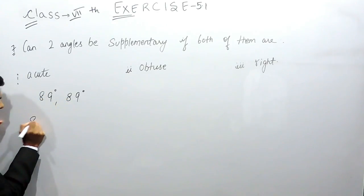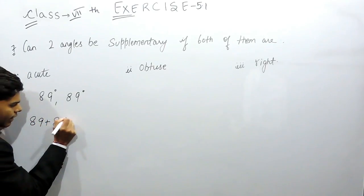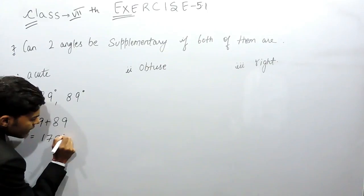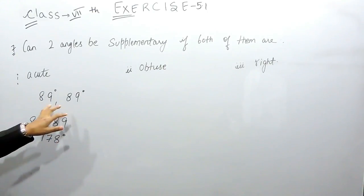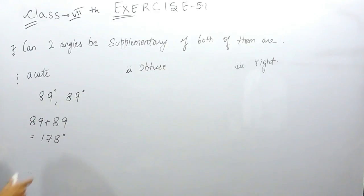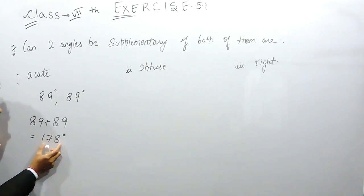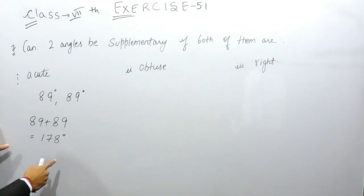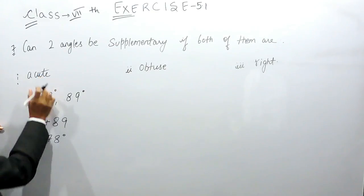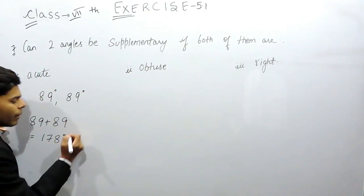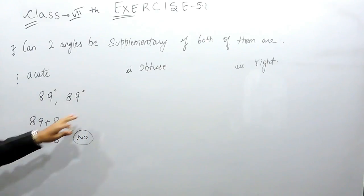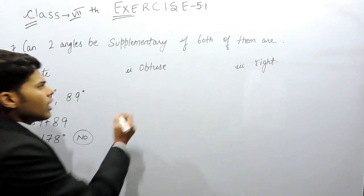We add them: 89 plus 89 equals 178 degrees. Since we took the highest possible acute angle and the sum is only 178 degrees — which is not equal to 180 degrees — any two acute angles cannot form supplementary angles. So the answer is No.